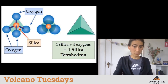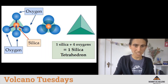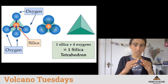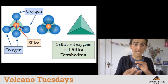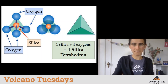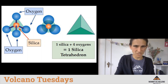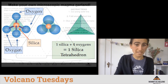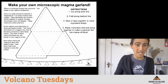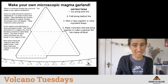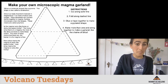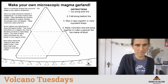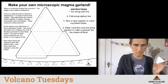Today we are going to build paper models of silica tetrahedrons. To do this, you can use a worksheet on our website. This worksheet outlines the different shapes you need to cut out and gives you information about silica and why it is related to volcanoes. You can also download the worksheet and do it later, or follow along with me today without the worksheet because I'm going to explain how to build your own paper silica tetrahedrons.